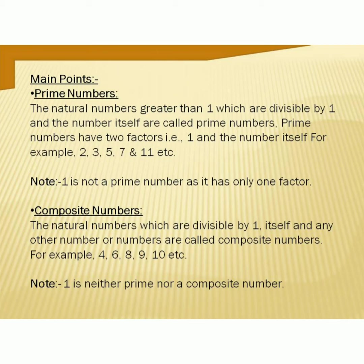First: prime numbers. In earlier classes, we already learned about prime numbers. Prime numbers are natural numbers greater than 1, which are divisible by 1 and the number itself. Prime numbers have exactly two factors: 1 and the number itself. For example, 2, 3, 5, 7, 11, etc. The smallest prime number is 2, and it is the only even prime number.